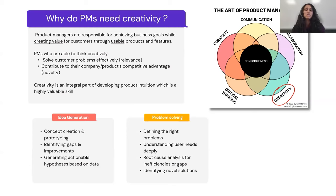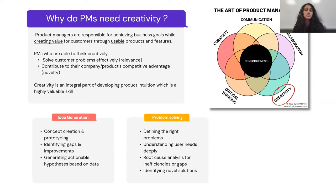Let's say you were tasked with building a modern platform and migrating users from a legacy platform to the modern one. A good PM will aim for feature parity. But a great PM who's able to think creatively will go deeper, understand the user needs better, and build the modern platform with the right set of features — maybe even removing a few of the legacy ones because they don't solve the user need correctly.